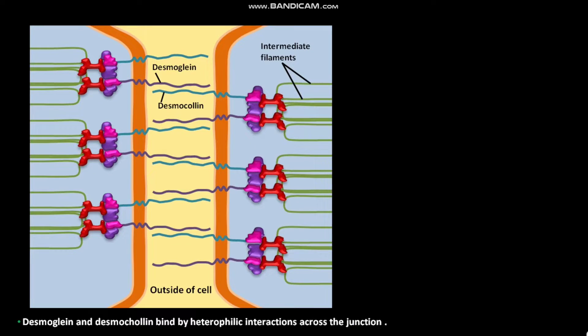Desmoglaene and desmocoline bind by heterophilic interactions across the junction. The armadillo family proteins Placoglobin and Placophylline bind to the cytosolic tail of the catherines like desmoglaene and desmocoline.